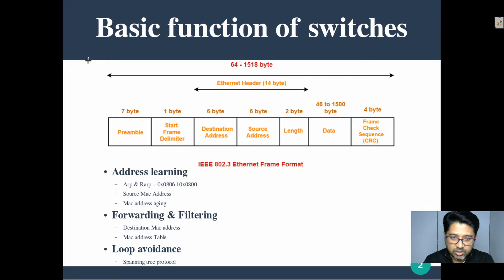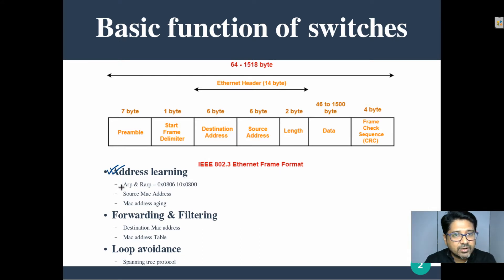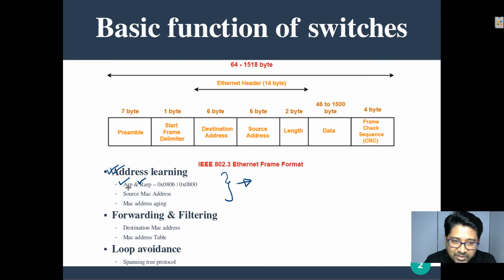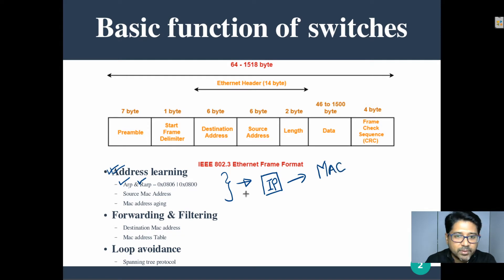The first basic function is address learning — MAC address learning. Today we'll do a lab and understand the packet-level knowledge of how the ARP table gets built. ARP stands for Address Resolution Protocol. It resolves from IP to MAC — that's what ARP does.